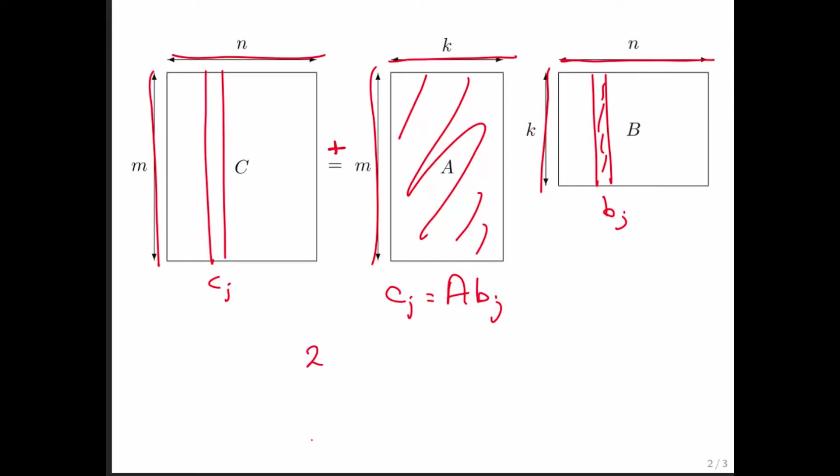So what's the cost of a matrix-vector multiplication? It is 2, a multiply and an add, times the number of entries in A, but this particular matrix has M times K elements. So that's the cost of computing one column of C. How many columns of C do we have? We have N.